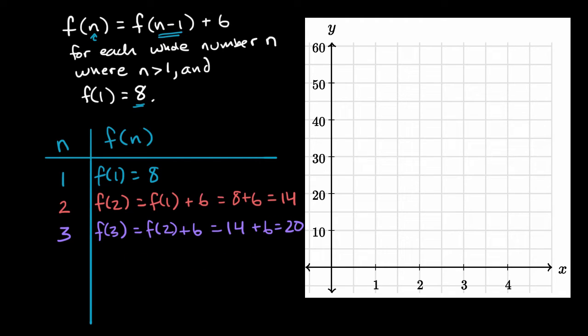And then last but not least, when n equals four, well, let's figure out. f of four is going to be equal to f of three plus six, which is equal to 20. f of three is 20 plus six, which is equal to 26.